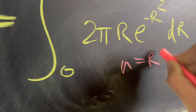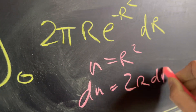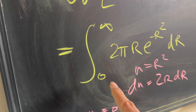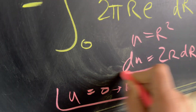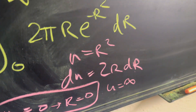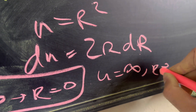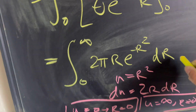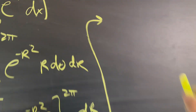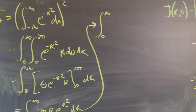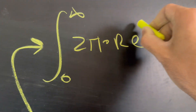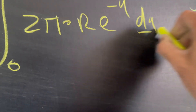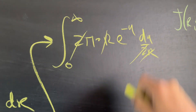This is a simple integral we'll solve using u-substitution. Let u equal r squared, so du equals 2r dr, meaning dr equals du over 2r. The limits stay: when r equals 0, u equals 0; when r approaches infinity, u approaches infinity. Substituting in, we get the integral from 0 to infinity of 2 pi times r times e to the negative u times du over 2r. The 2's cancel and the r's cancel.